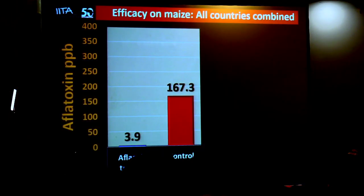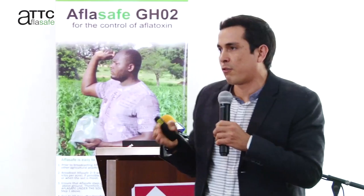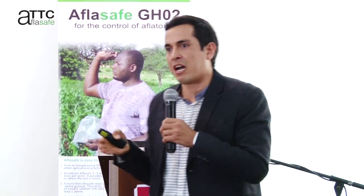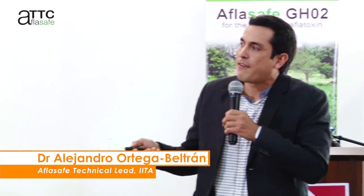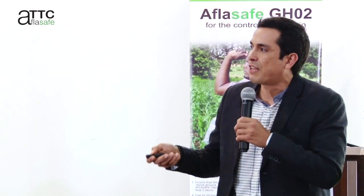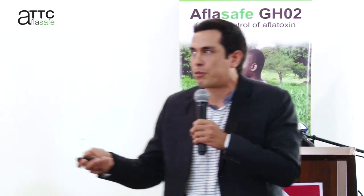Aflasafe is not an initiative developed only for Ghana — we have this initiative for 17 other countries at different stages of product development. In maize fields treated with Aflasafe, we have around four parts per billion on average, sometimes a little more, in many cases zero. But fields not treated with Aflasafe have an average of 160 parts per billion.